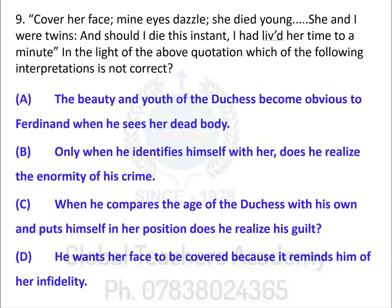Let's look at the ninth question. The question starts with a quote: 'Cover her face. My eyes dazzle. She died young. She and I were twins. And should I die this instant, I'd lived her time to a minute.' In the light of the above quotation, which of the following interpretations is not correct? The UGC NET exam often plays with the word 'not' or 'odd one out,' and one must read the question carefully.